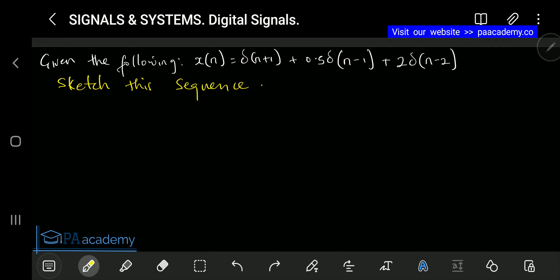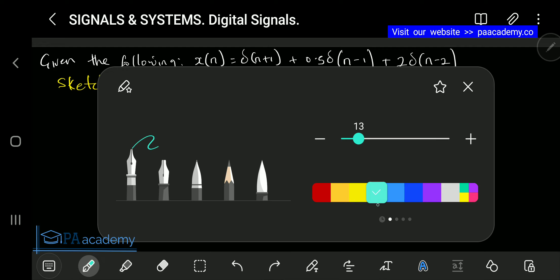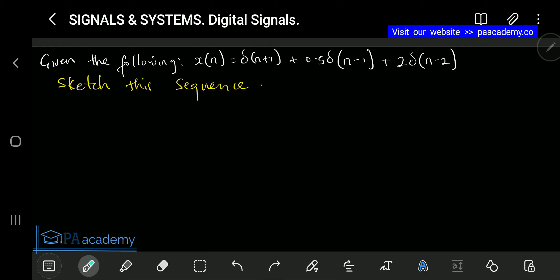Now let's get started. If you look at this question, we have moved into digital signals. This is a question on digital signals. It says given the following: x(n) = δ(n+1) + 0.5δ(n-1) + 2δ(n-2). Now first thing, let's analyze this question.